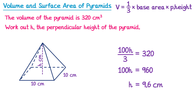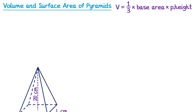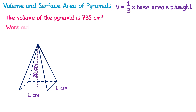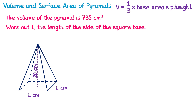Let's have a look at another question with this sort of style. We have a different pyramid this time, and we're missing l. We're told the volume is 735, and we need to work out l, which is the length of the side of the square base. So let's imagine we were finding the volume: we would do one-third multiplied by the base area — but this time the base is a square of length l, so l times l — and then multiplied by the perpendicular height, which we do know, that's 20. And this must equal 735.